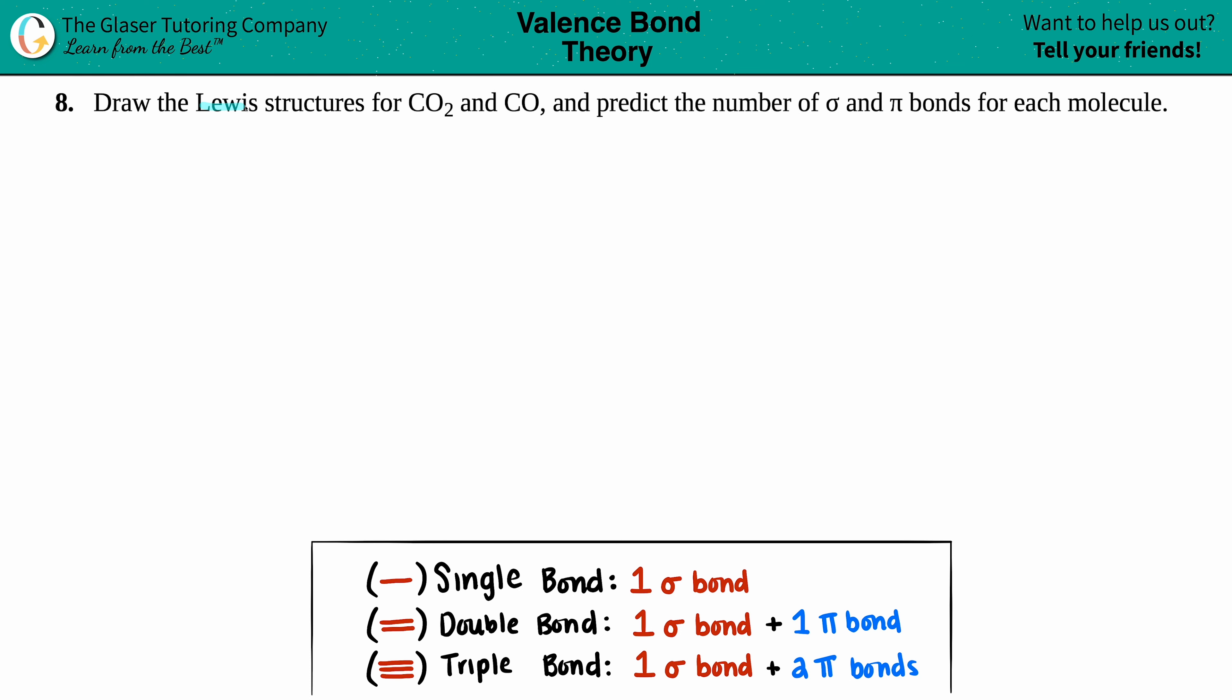Number eight, draw the Lewis structures for CO2 and CO and predict the number of sigma and pi bonds for each molecule. Okay, pretty straightforward. Just know that I said words for these symbols. Anytime you see this symbol, this is always a sigma. So we're talking about sigma bonds. And this you've probably seen in your math class, that's pi. So we have to just determine how many sigma bonds and how many pi bonds we have.